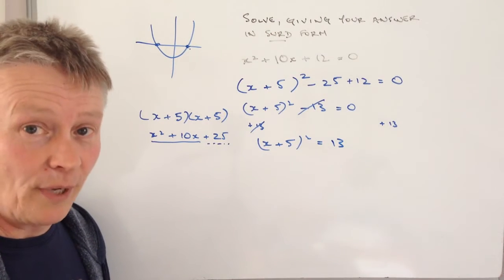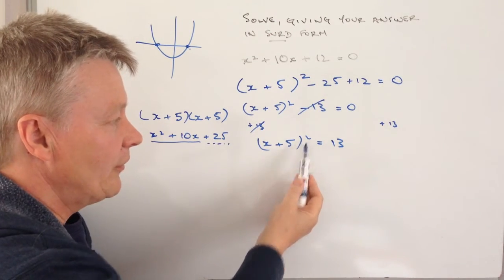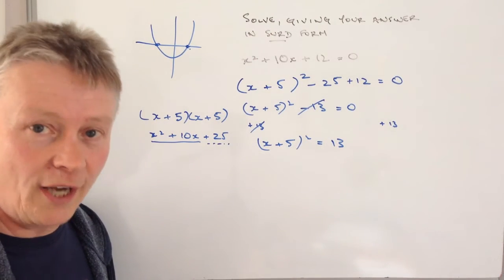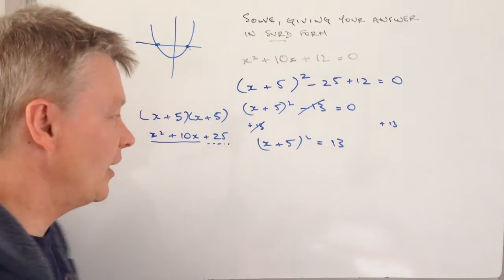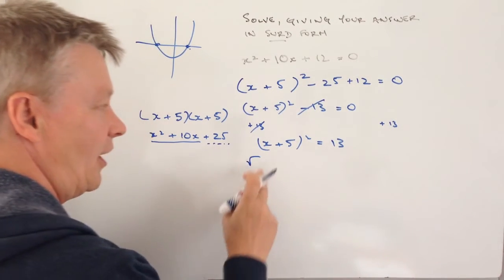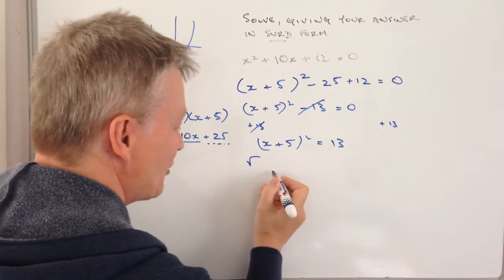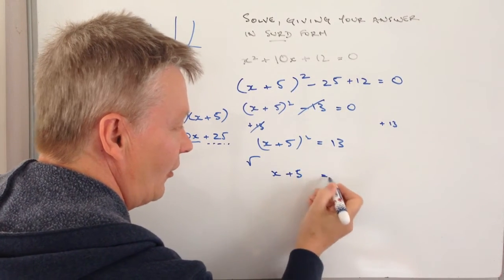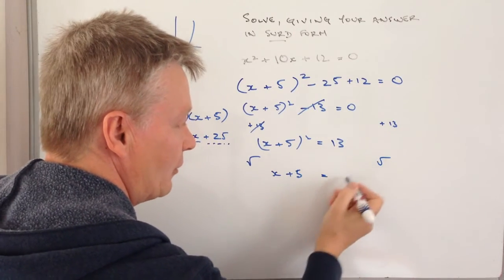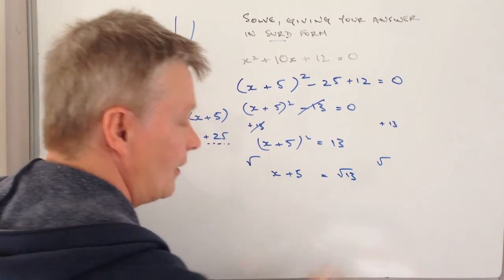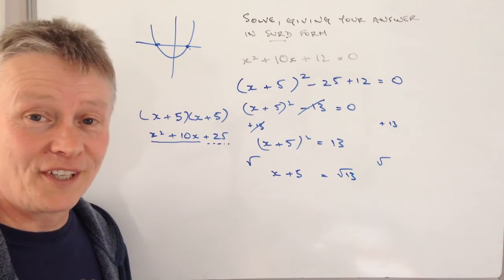That's looking better now. I just need to get rid of that squared, so I'm going to square root both sides. The square root of x plus 5 squared is just x plus 5. On the right hand side, the square root of 13 is just square root of 13.